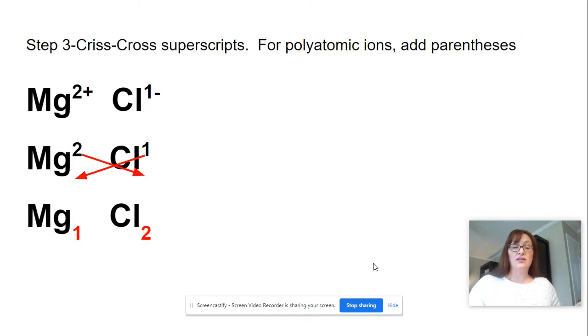Step 3, we're going to criss-cross. So the 2 comes down to be the subscript for the chlorine, and the 1 comes down to be the subscript for the magnesium, and they switch. And this is going to tell us, instead of telling us about the electrons, now it's telling me how many ions do I need of that type to bond together. So right now I have Mg with a subscript 1 and Cl with a subscript 2.